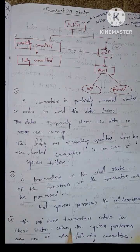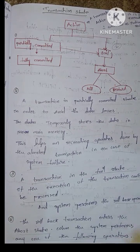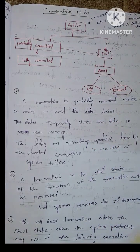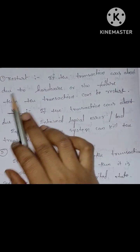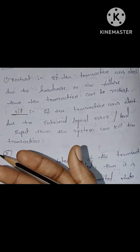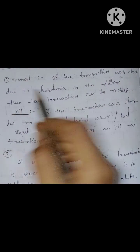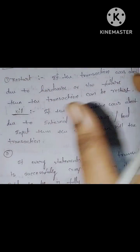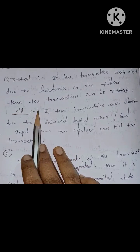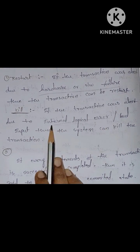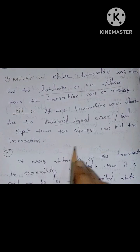Fourth, the transaction enters the Abort State when the system performs any one of the following operations: rollback operations. If the transaction was aborted due to hardware or software failure, then the transaction can be restarted. If the transaction was aborted due to hardware, software failure, or logical error, then the system can kill the transaction.